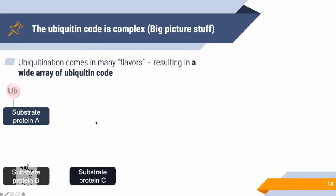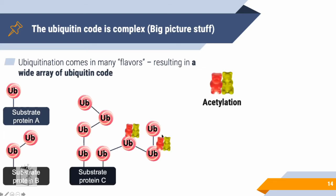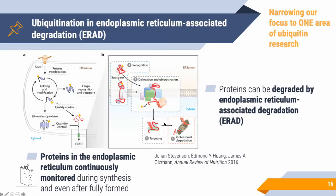Substrate proteins can be modified by ubiquitin in many ways: a single ubiquitin, two ubiquitins, or chains joined in different ways, creating a complex branching code. Ubiquitin is itself a protein, so it can be further modified by other modifications like acetylation or phosphorylation, adding even more signatures to the system.